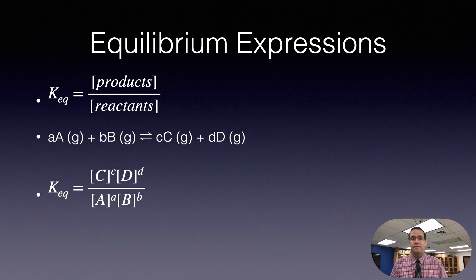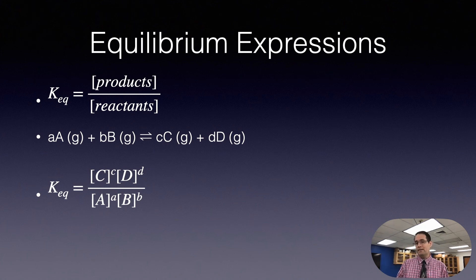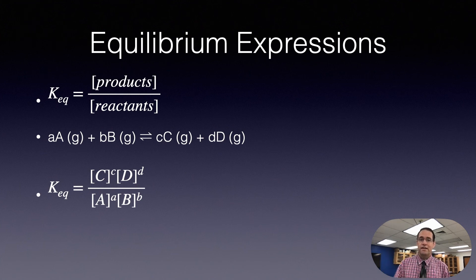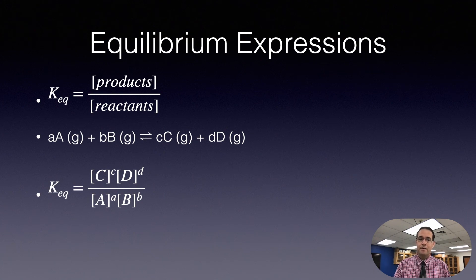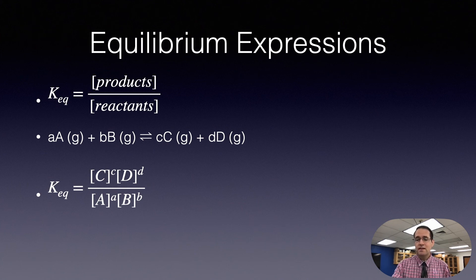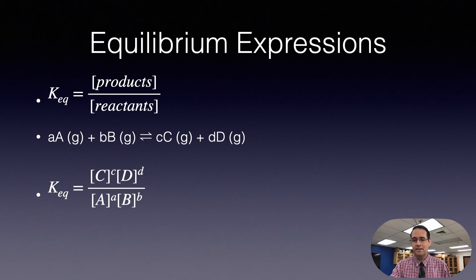If you have a chemical reaction A + B going to C + D, you want to write down the concentrations of C and D — the products — over the concentrations of A and B — the reactants. You want to use the coefficients as powers for each reactant and product. Here they're all gases, so they all enter the equilibrium expression. Check the OpenStax textbook for more written detail.